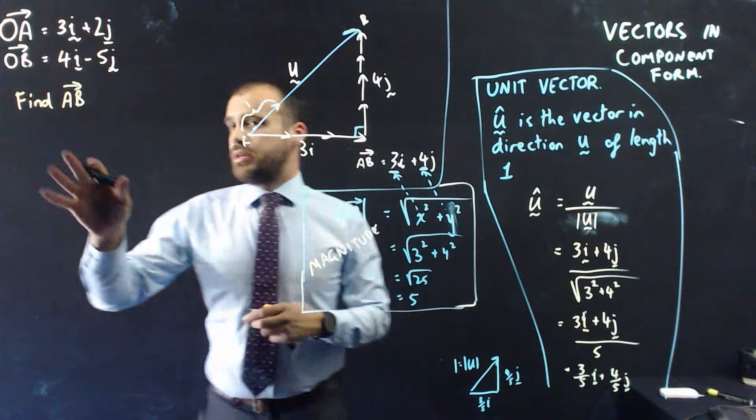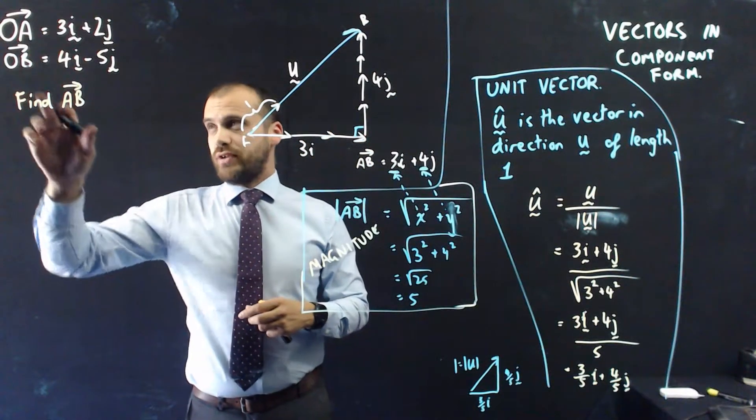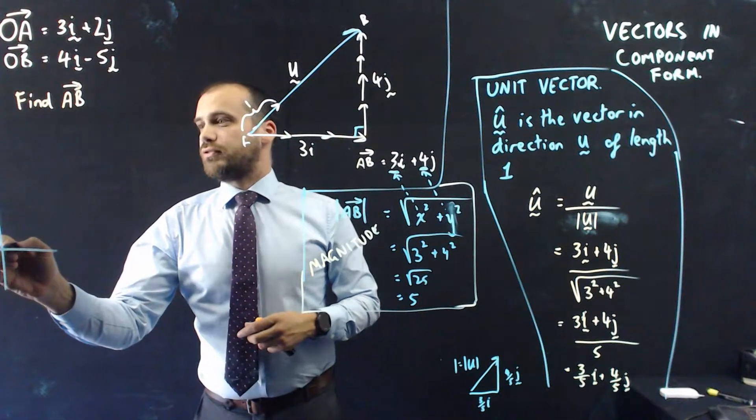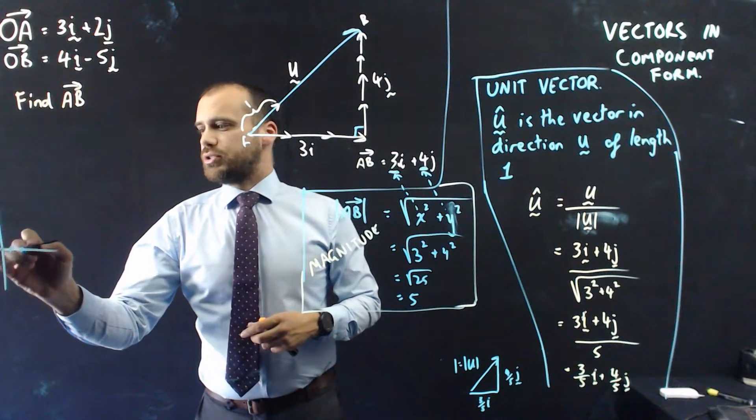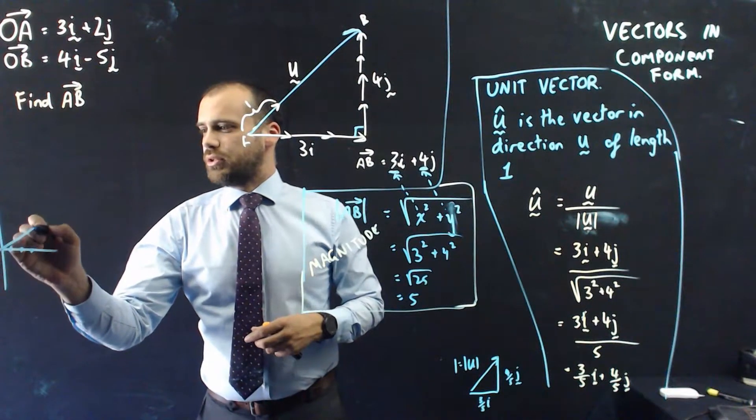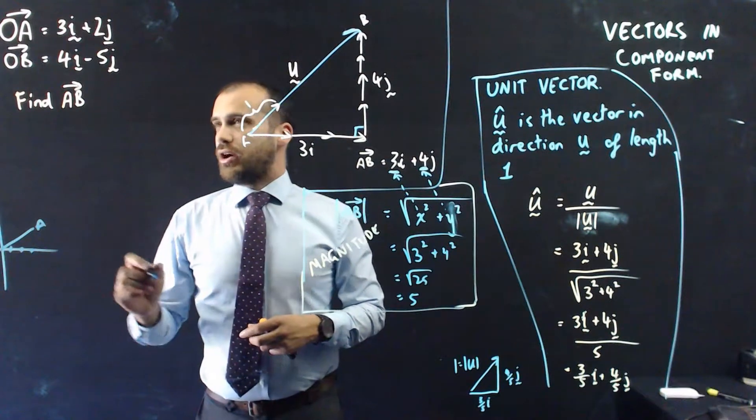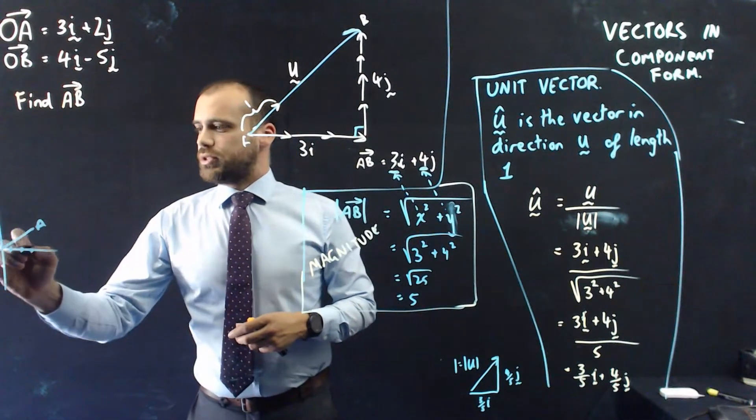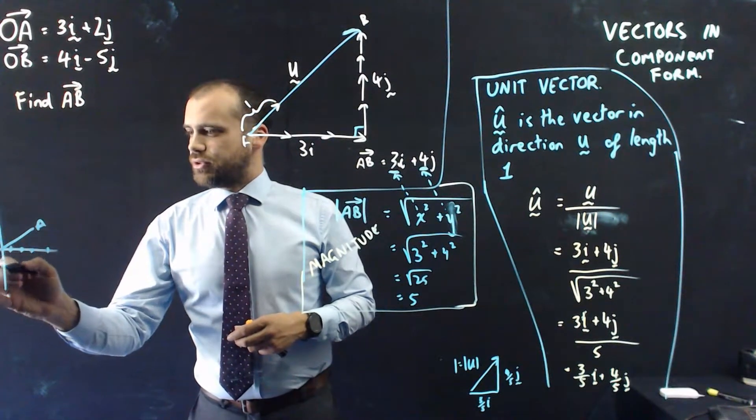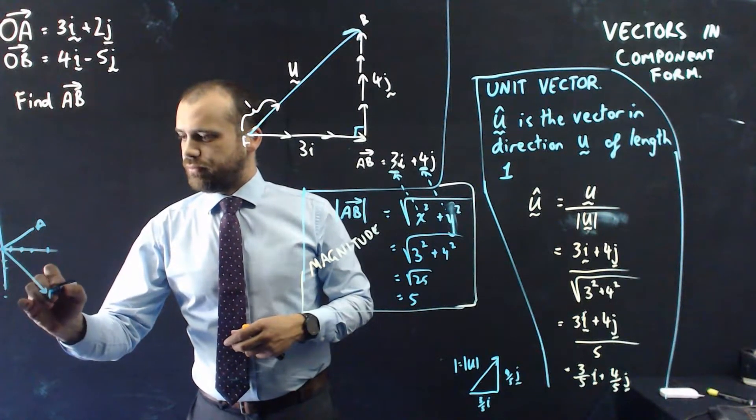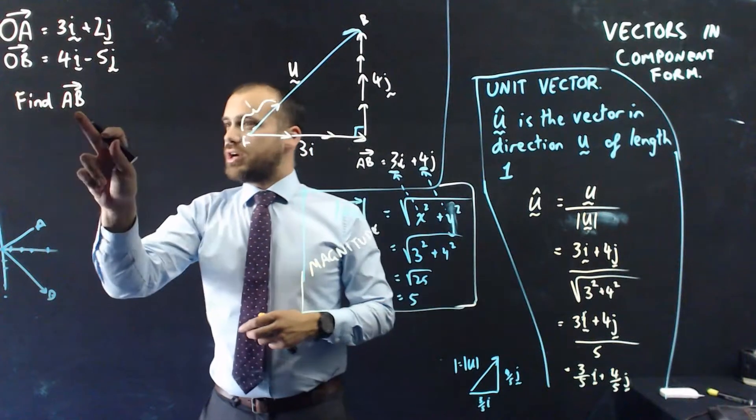All right, so what I'm going to do here is take two position vectors, OA and OB, so a little Cartesian plane here, moving from O to A, 1, 2, 3, 1, 2. So we've got one that looks like that. That's OA, that's point A there. And OB looks like 1, 2, 3, 4, 1, 2, 3, 4, 5, 1, 2, 3, 4, 5. Like that.